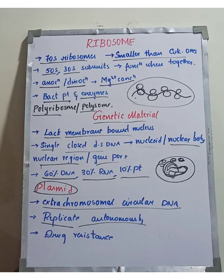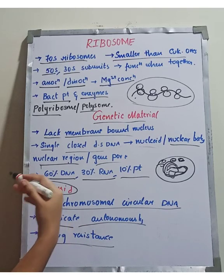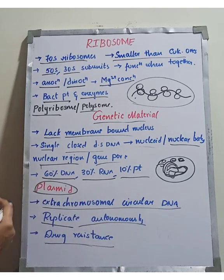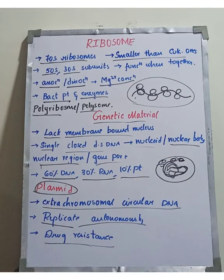The plasmid can replicate independently. It carries special characteristics of bacteria, including drug resistance. In bacteria, plasmids can confer pathogenicity and drug resistance.